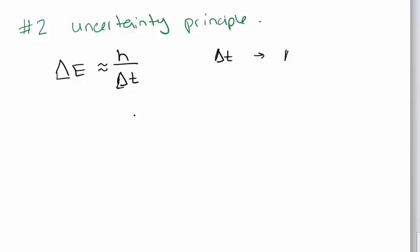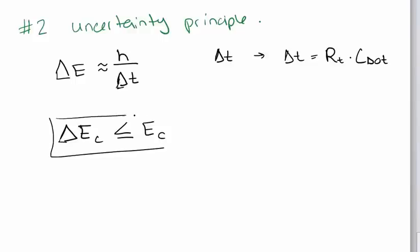So delta T is going to be equal to RT times C dot. So it has to do with the capacitance and the resistance. So the rule here is that the uncertainty in the energy it takes to add another electron to the well must be less than or equal to the actual energy it takes to add that electron. So this is where the key of this rule is.